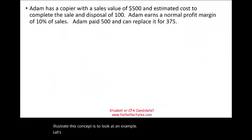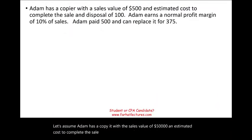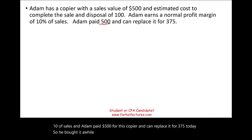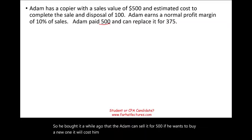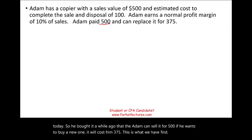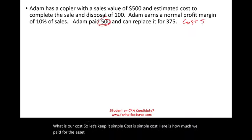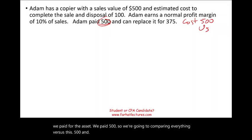Let's assume Adam has a copier with a sales value of $500, an estimated cost to complete the sale and disposal of $100. Adam earns a normal profit of 10% of sales, and Adam paid $500 for this copier and can replace it for $375 today. So cost is $500; we're going to compare everything versus this $500 and pick the lower of cost or whatever we determine the LCM to be.